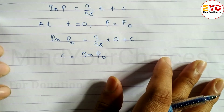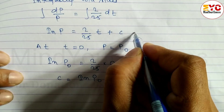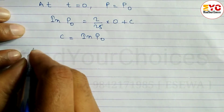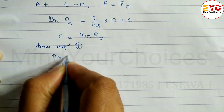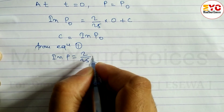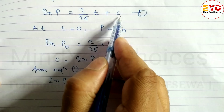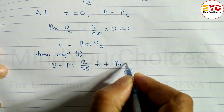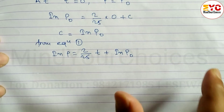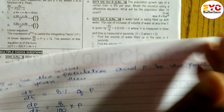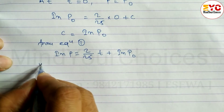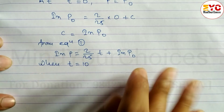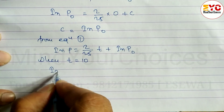Substituting c = ln p0 back into equation 1: ln p = (2/25)t + ln p0. To find the population after 10 years, we put t = 10.